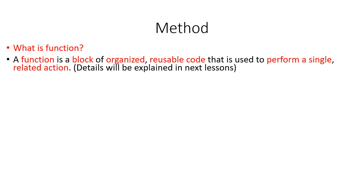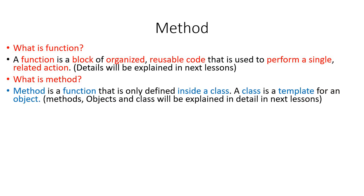Let's define function first. A function is a block of organized reusable code that is used to perform a single related action. Then what is a method? Method is the same thing — it's a block of organized reusable code that is used to perform a single related action.